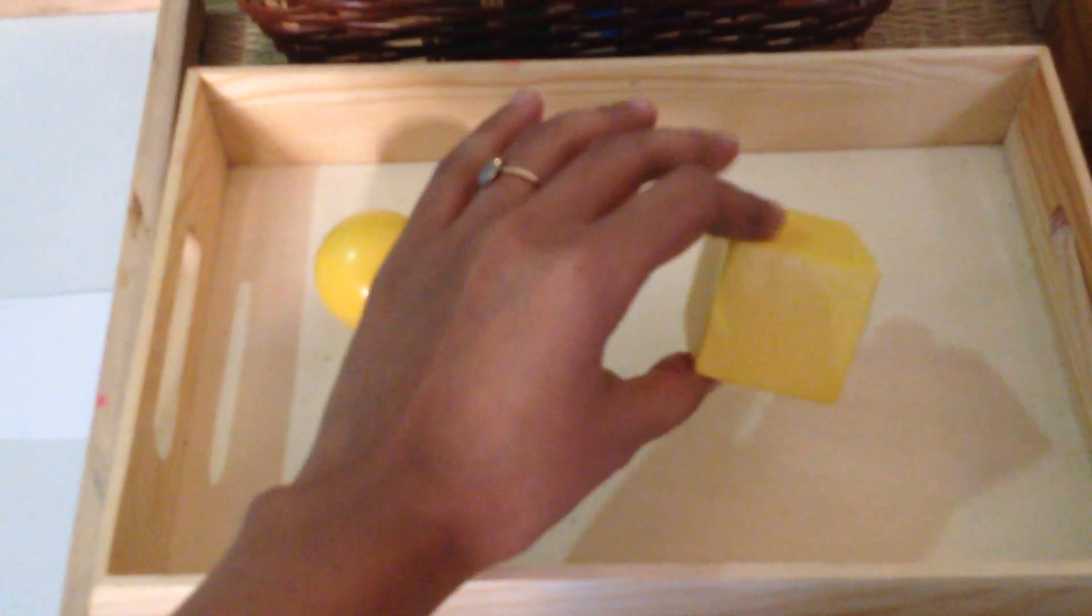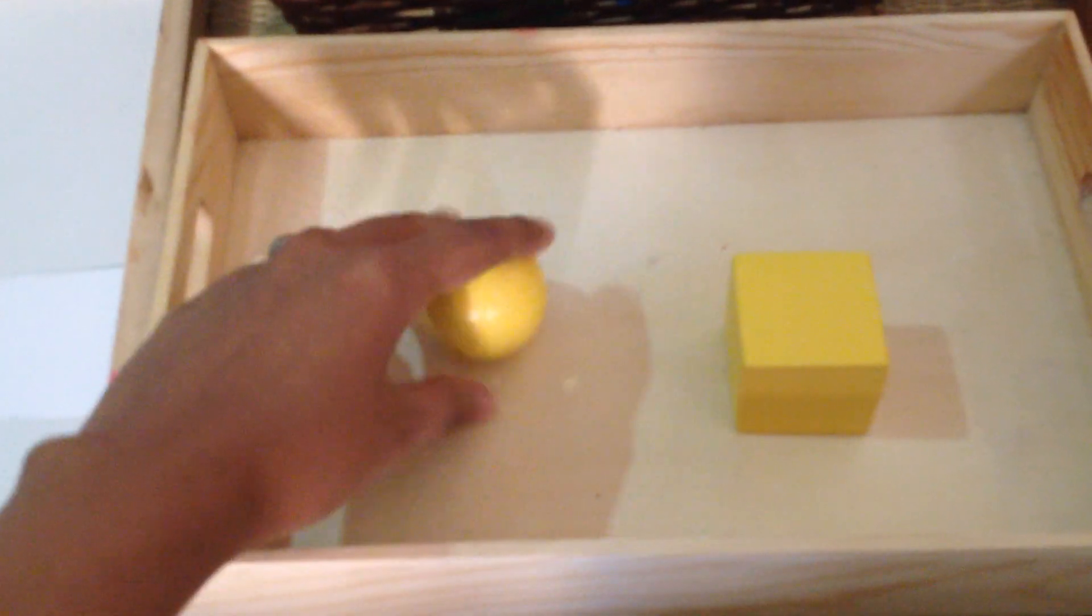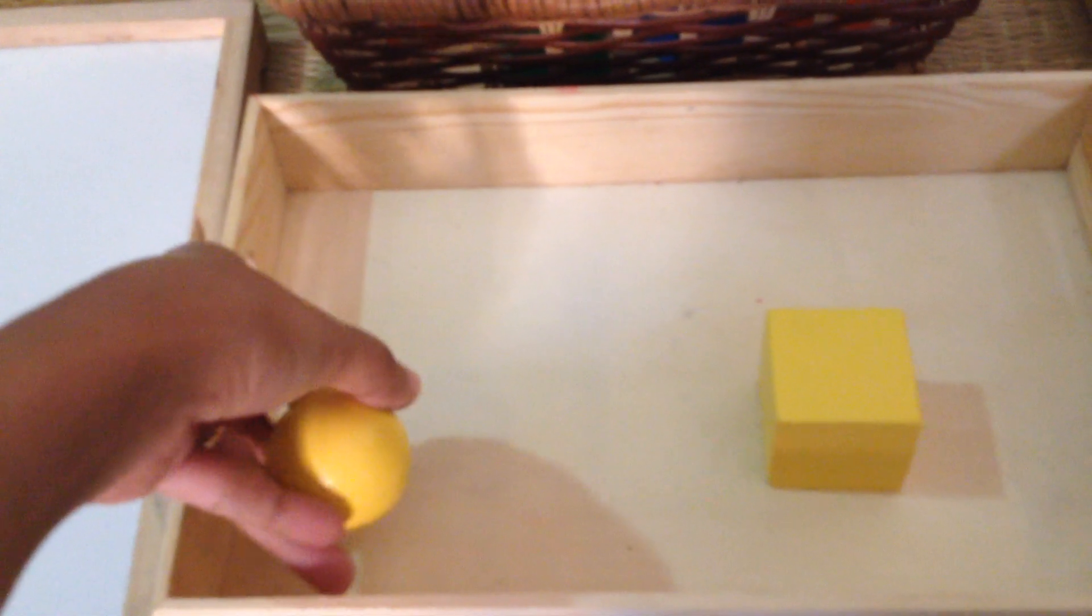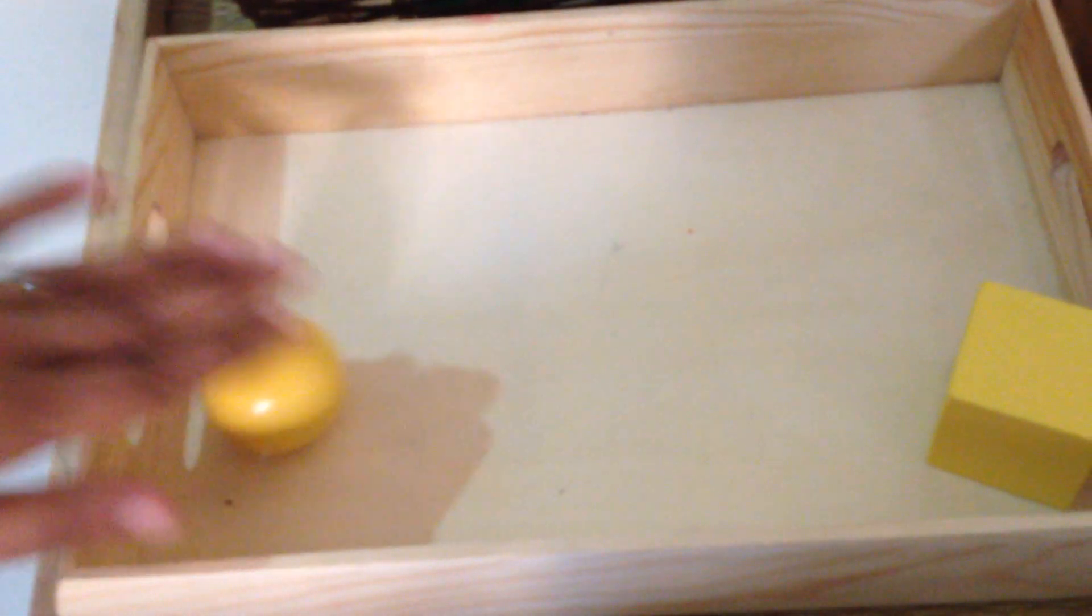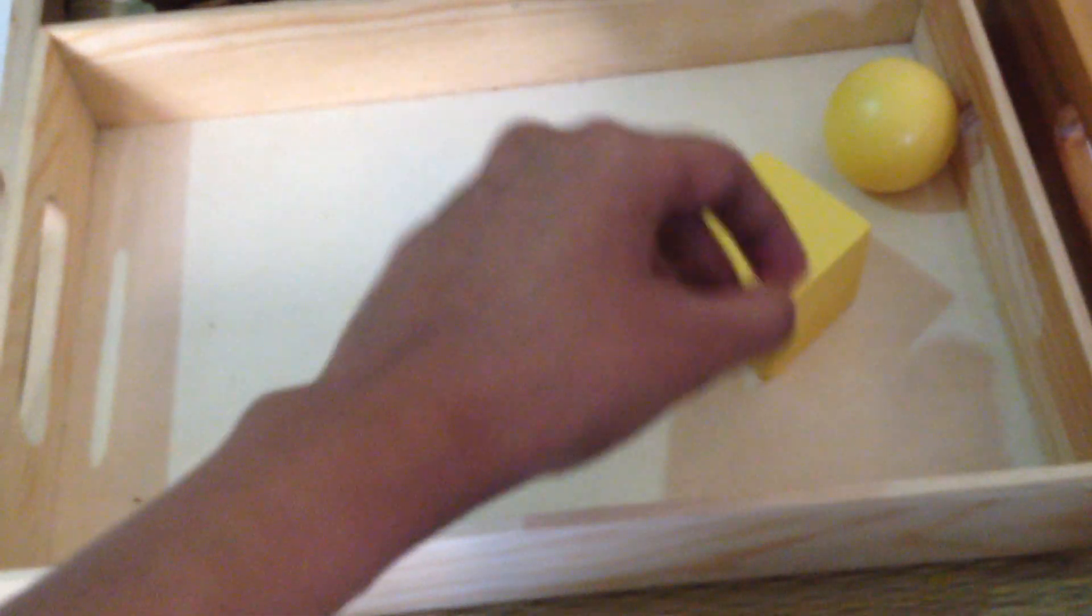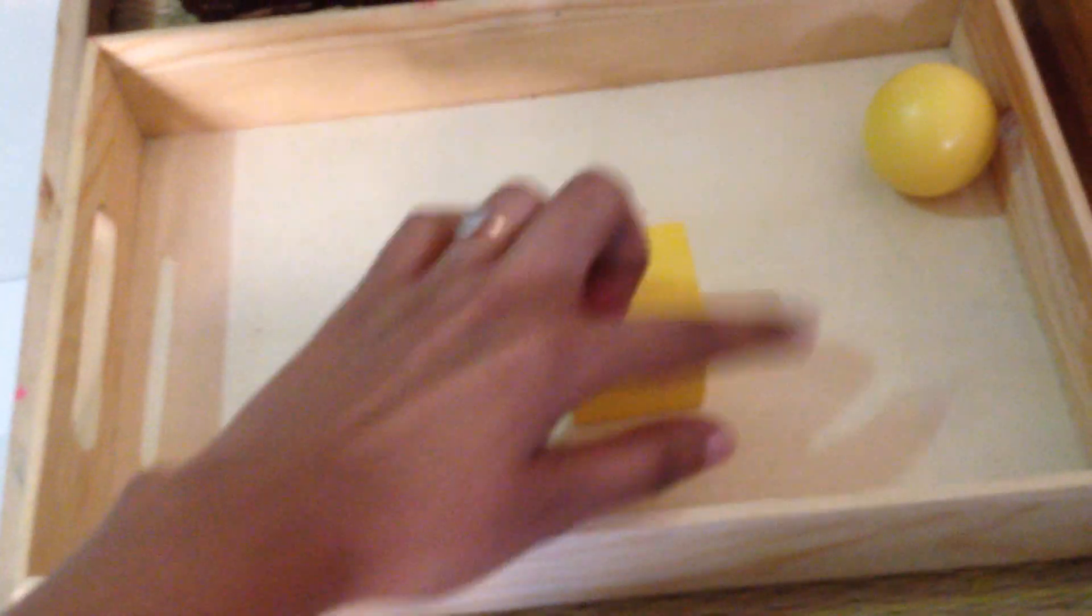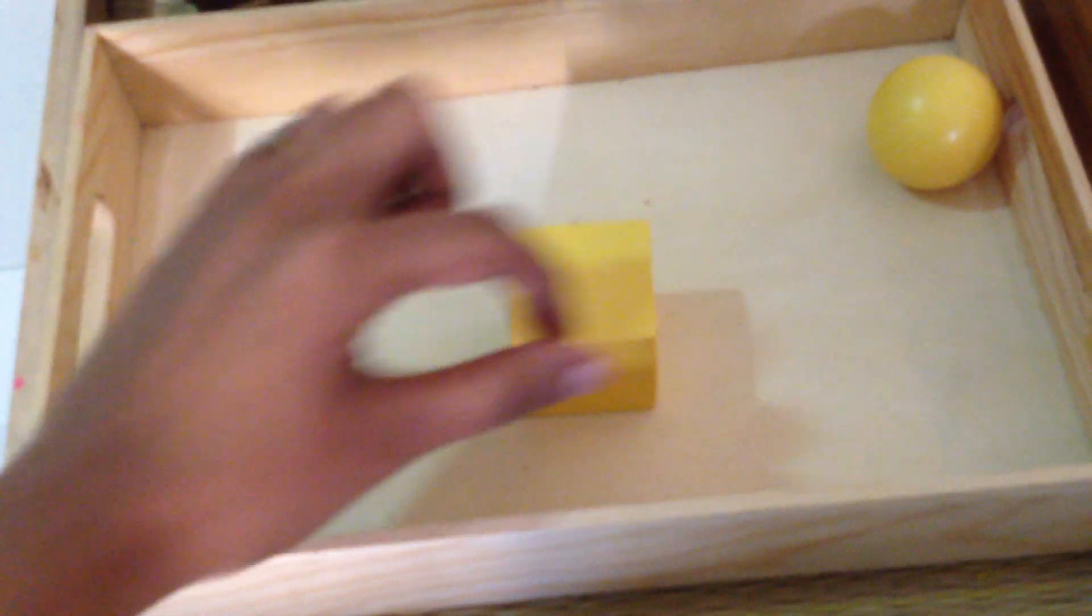Similarly, this is a cube. It's a 3D counterpart to a square. And then you can say, look at this, how the sphere rolls. Try to roll it. Then ask your child to roll it. And if you try to roll the cube, oops, it does not roll. And then you can talk about how the cube has these sides which are squares.